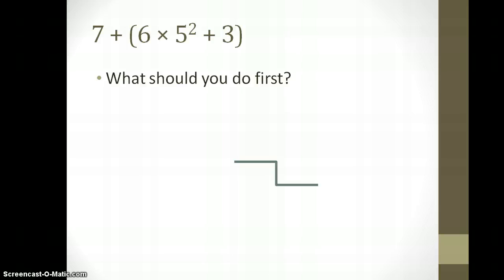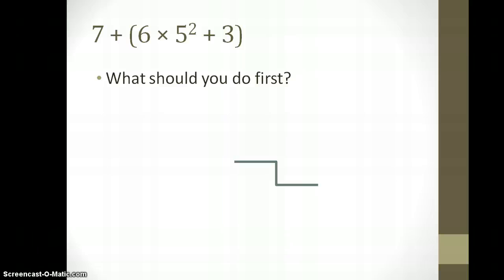So in this example, 7 + (6 × 5² + 3), what should you do first? Well, according to PEMDAS, or order of operations, here's what you should do. The parentheses come first. So you do everything that's in the parentheses first. Now that I'm inside the parentheses, I see three different operations. There's multiplying, there's exponents, and there's adding. According to PEMDAS order, I'm going to do exponents before I'm going to multiply and before I'm going to add or subtract.